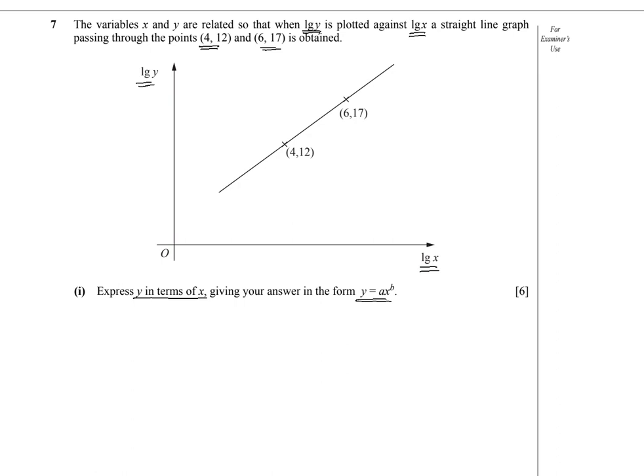In order to find the equation of the line, we need to know the gradient. So let's find the gradient. We know that the gradient is y2 minus y1 divided by x2 minus x1. Using the two coordinates, m equals (17 minus 12) divided by (6 minus 4), which is 5 over 2. So the gradient of the line is 5 over 2.